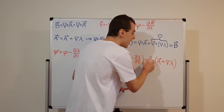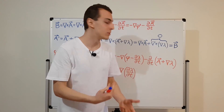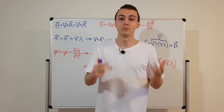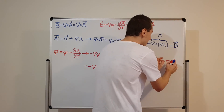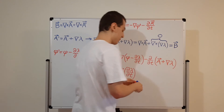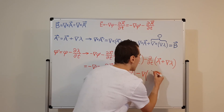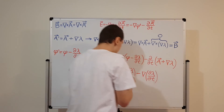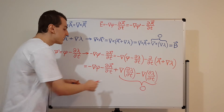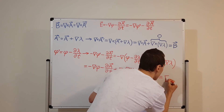The gradient consists of partial derivatives with respect to position coordinates x, y, and z, and we're allowed to commute time derivatives and position derivatives. So we can bring the time derivative inside the gradient, giving minus the gradient of the partial time derivative of lambda. This term is identical to the previous extra term but with opposite sign, so they cancel. We're just left with minus the gradient of phi minus the partial time derivative of A, which is defined to be the electric field.